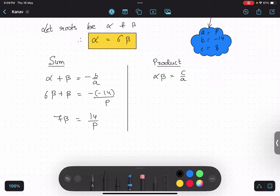Instead of alpha, I will be writing six beta multiplied by beta equals to c value, eight upon p. So six beta square equals to eight upon p.